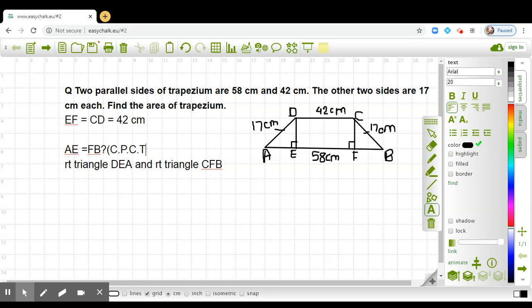So we have now AE is equal to FB. Now tell me what will be the length of AE and FB.